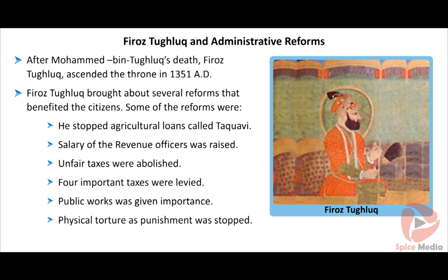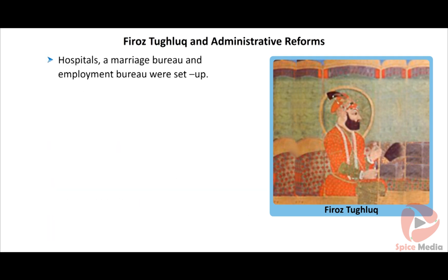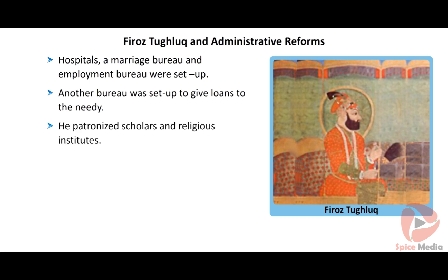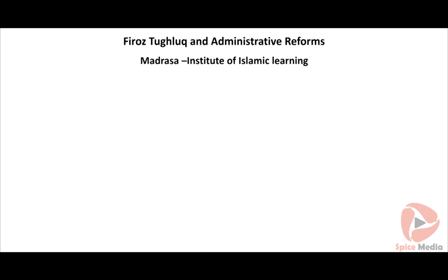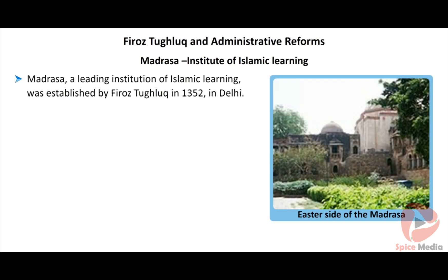Physical torture as punishment was stopped. Hospitals called Darul Shafa, a marriage bureau called Diwani-e-Kheret and an employment bureau were set up. Another bureau called Diwani-e-Stigbak was set up to give loans to the needy. He patronized scholars and religious institutes. Madrasa, an Institute of Islamic Learning, was established by Firoz Tughlaq in 1352 in Delhi.